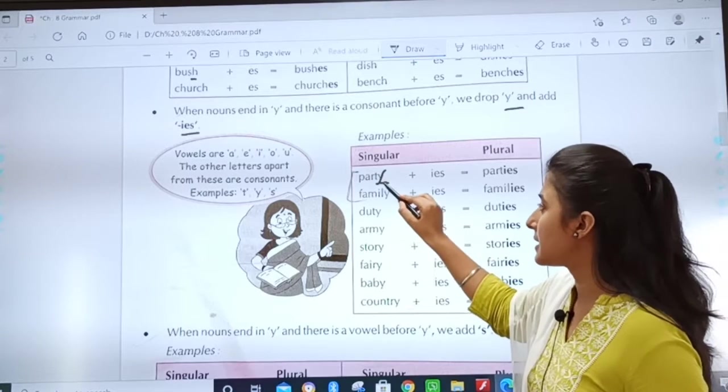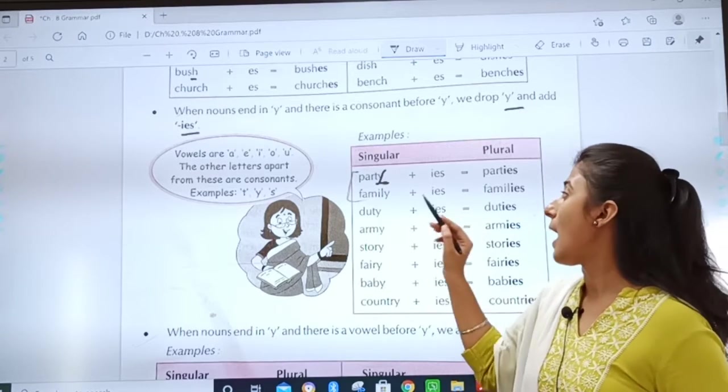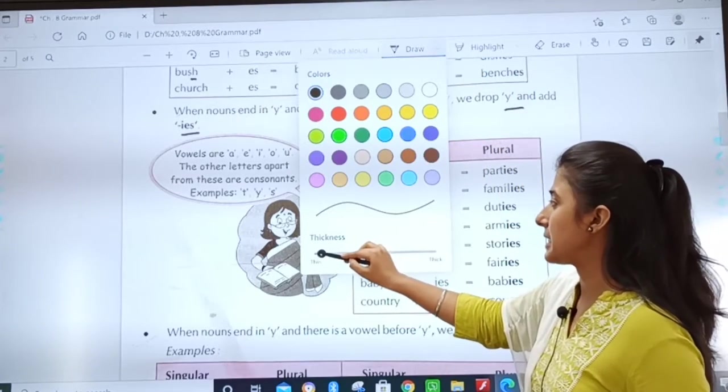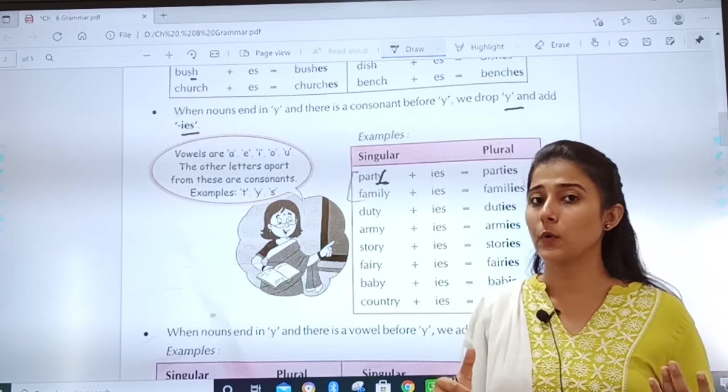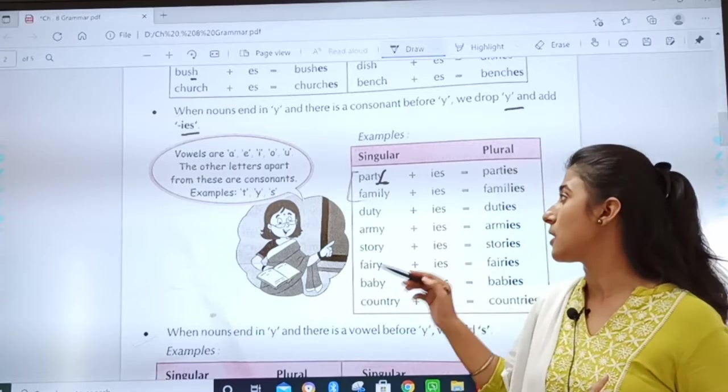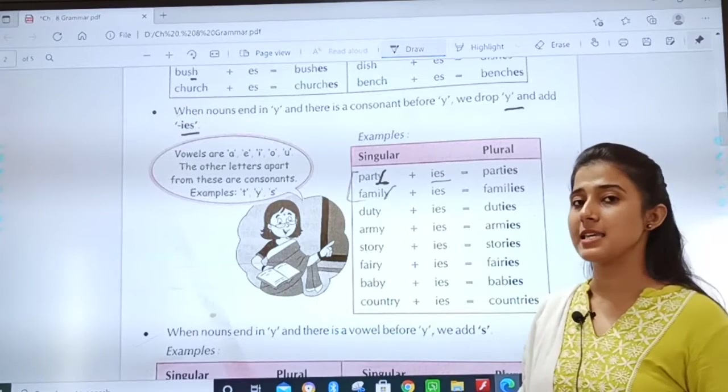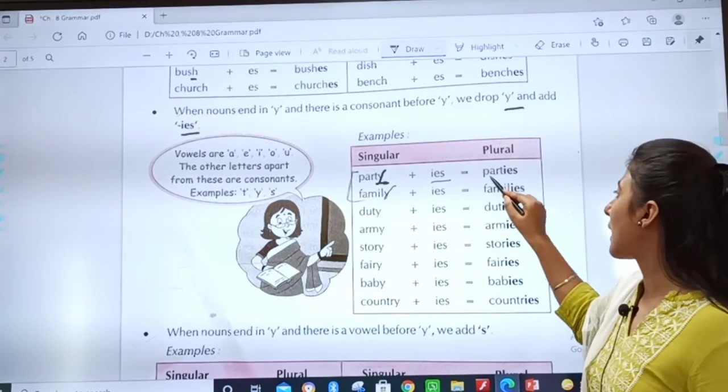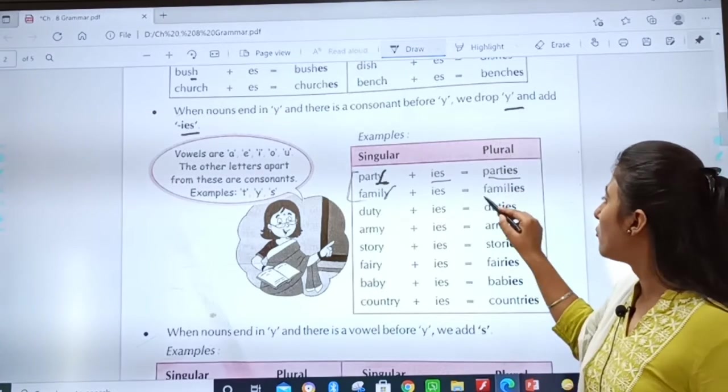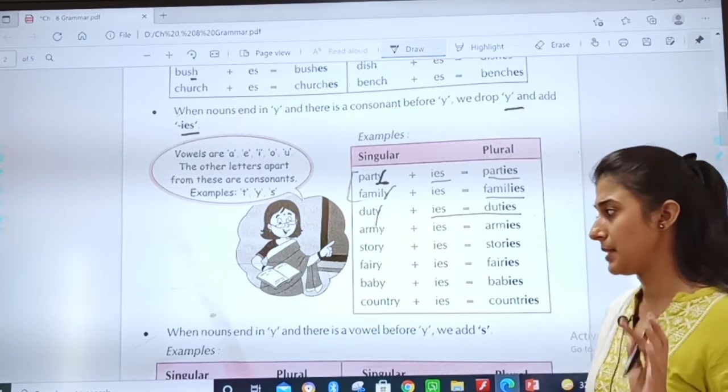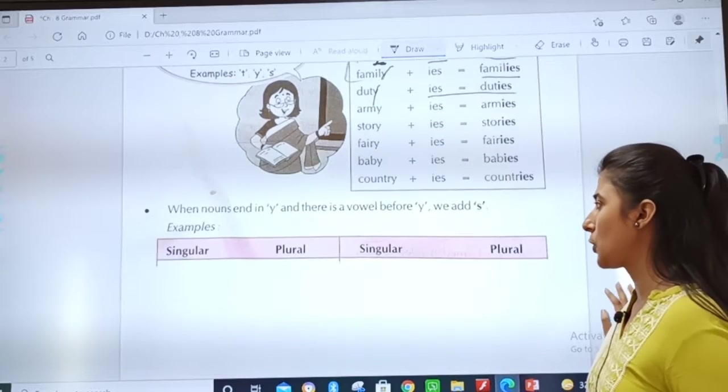For example, party. It is ending with Y. And what can you see before Y? T. T is a vowel. No. T is a consonant. So, we will drop Y and add IES. So, it will become parties, families, duties. Right? This much is clear? Good.